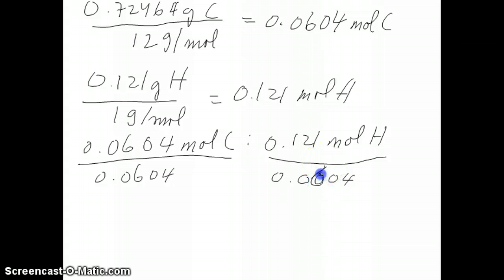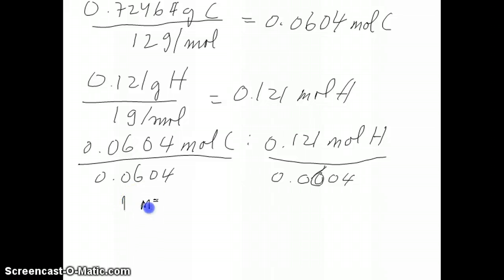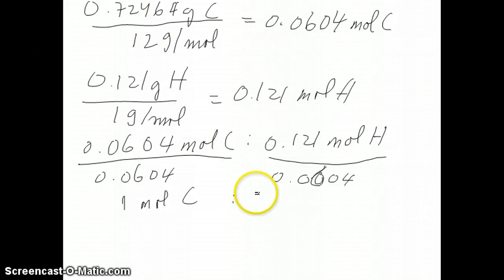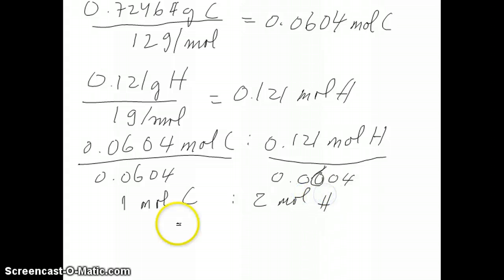Dividing both mole values by 0.0604 gives 1 mole of carbon and 2 moles of hydrogen. So the empirical formula is CH₂.